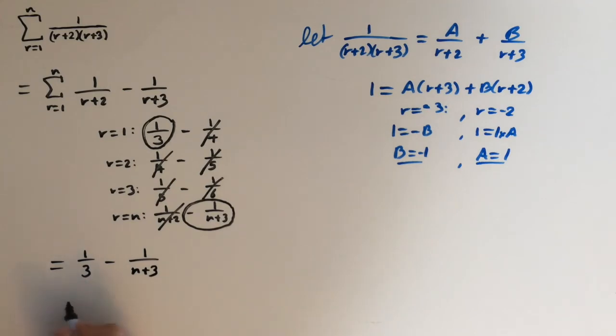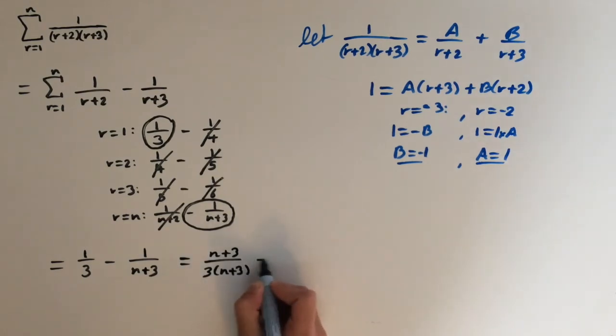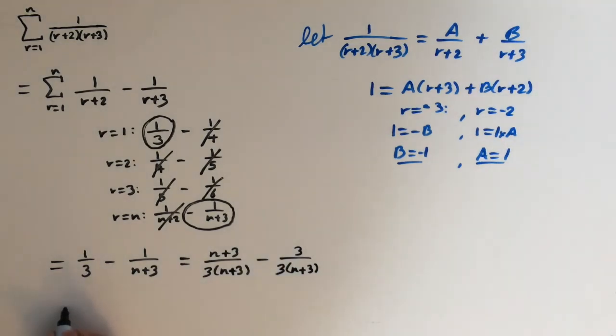So we can simplify this. If we multiply this fraction by n plus 3 top and bottom, we get n plus 3 over 3 times n plus 3. And now both of these fractions have got the same denominator, so we can just add them. Which means this is going to equal, the threes cancel out, so we're just left with n over 3 times n plus 3.